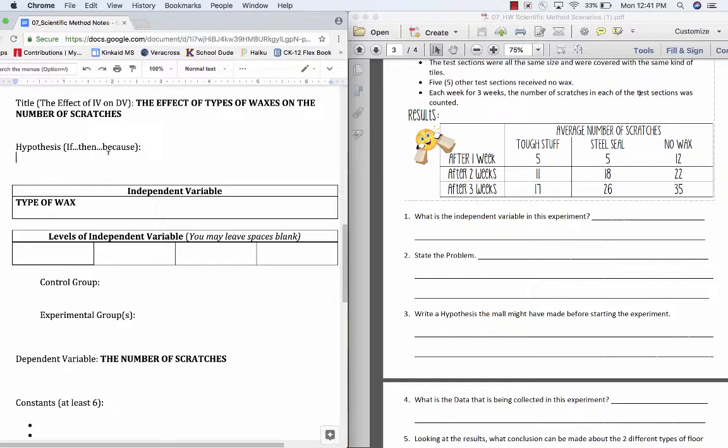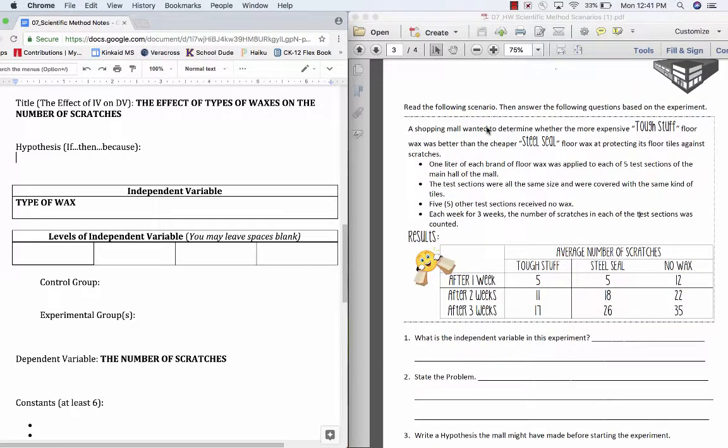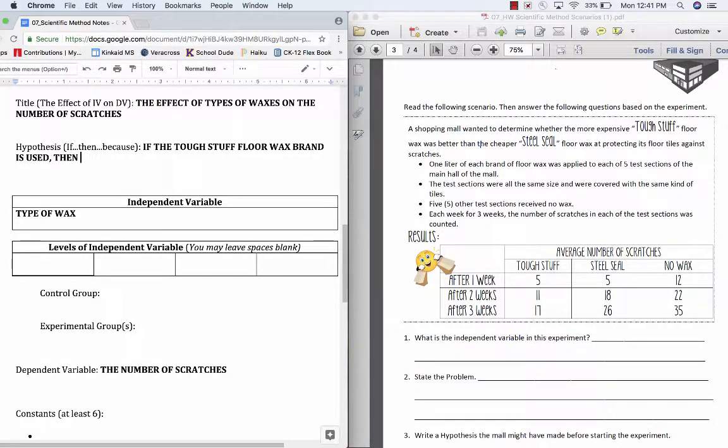Moving on, we always start with our hypothesis. A hypothesis is not just a guess. It is supported by evidence, background, research-infused prediction of what will work best. In looking at this, we are comparing Tough Stuff to the other brand Steel Seal. It's kind of hard to catch, but the shopping mall is thinking that the Tough Stuff is going to be better than the Steel Seal because it's more expensive, and typically we think more expensive shows a higher quality. So what we're going to do is put it in our hypothesis format, which is if, then, because.